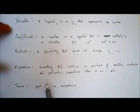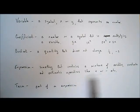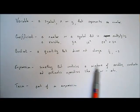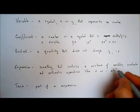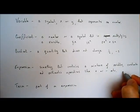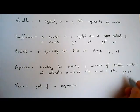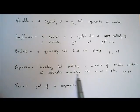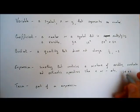An expression is something that combines all of these things — it contains a mixture of variables, constants, and arithmetic operations, things like plus, minus, multiply, or divide. So if I write down 3x plus 1, this is an expression. It contains variables — we've got x — constants — I've got 1 — and arithmetic operations — I've got a plus. The coefficient of x in this case is 3.